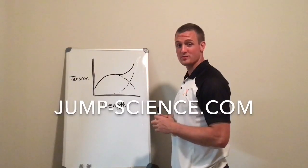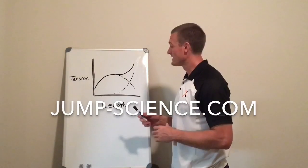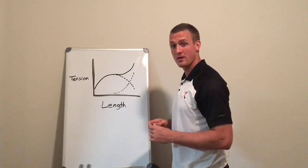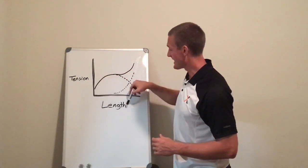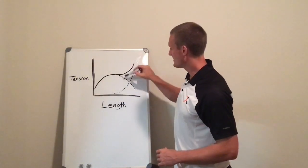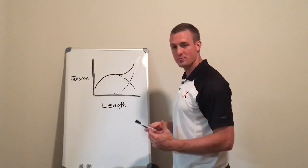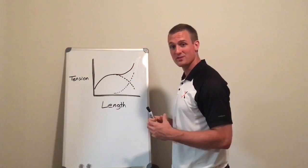Hey Daniel Bach here from JumpScience.com, we're talking about the length tension curve of muscle. So here we have tension versus length. This parabola here is what we call active tension. It's a product of the contractile components of your muscles.